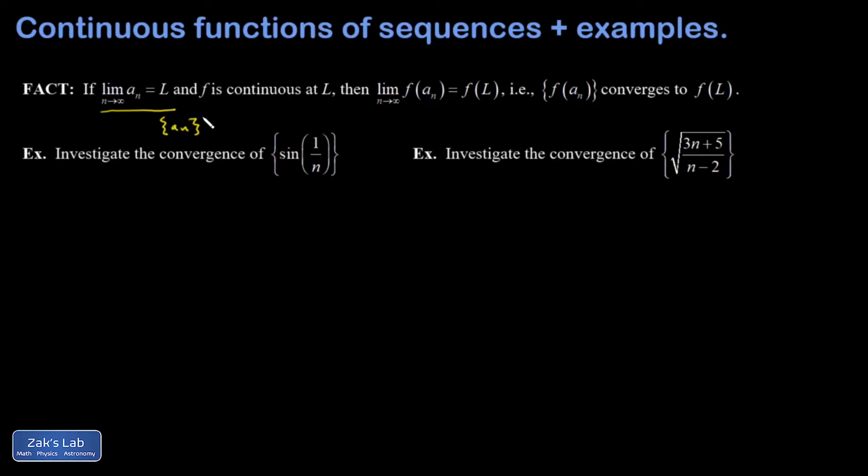And then we consider a function that's well behaved at that value l, so it's continuous there. And if it's continuous at l, then I can say the limit of f(a_n) is going to go to f(l). And that's exactly the same thing as saying that the sequence f(a_n) converges to f(l).